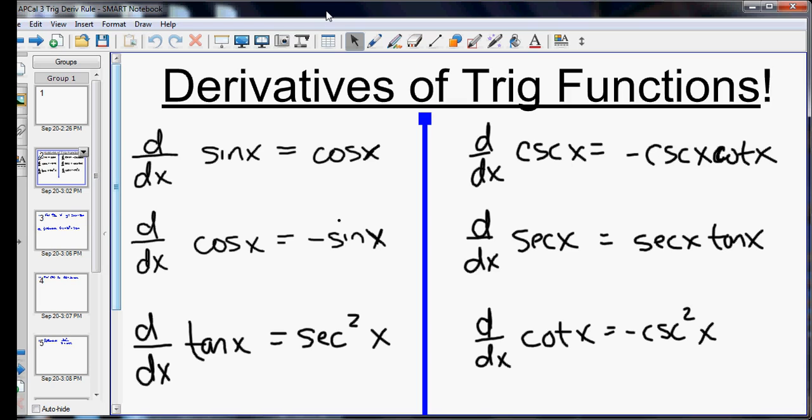One thing that can help is if you look at them in pairs. So for example, the derivative of sine is cosine. The derivative of cosine is negative sine.